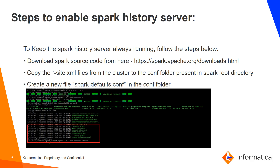For this demo, I have taken Informatica 10.2.1 as an example. Informatica 10.2.1 uses Spark 2.1, so I would need to download the Spark source code for Spark 2.1. I have done this on one of the data nodes. I would then need to copy the site XMLs from my cluster to the conf folder present in my Spark root directory.